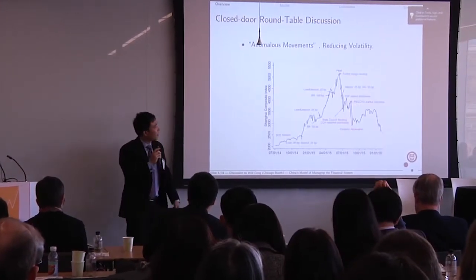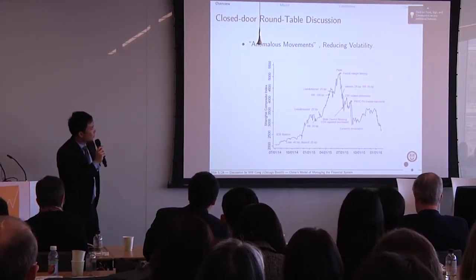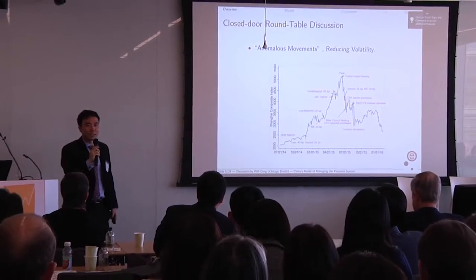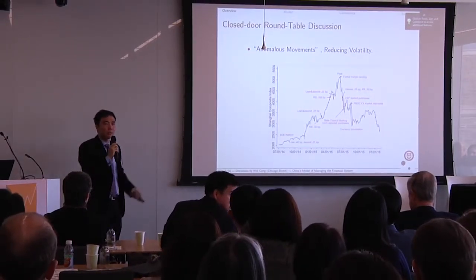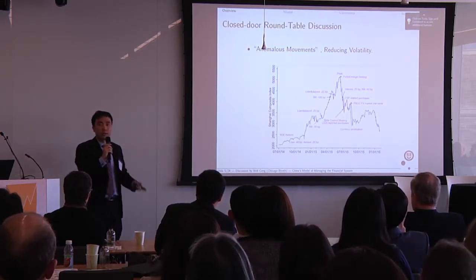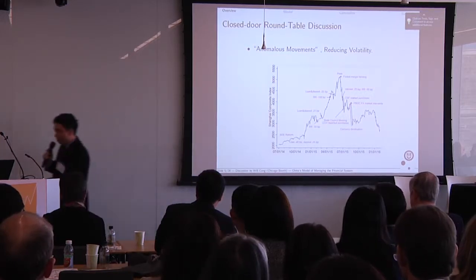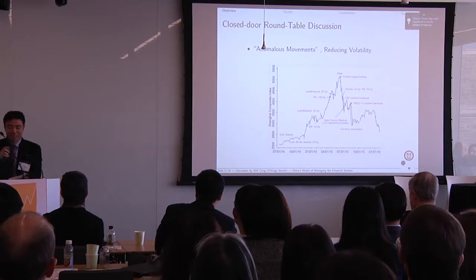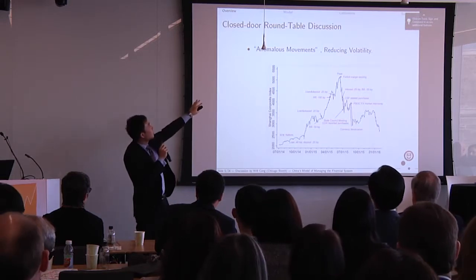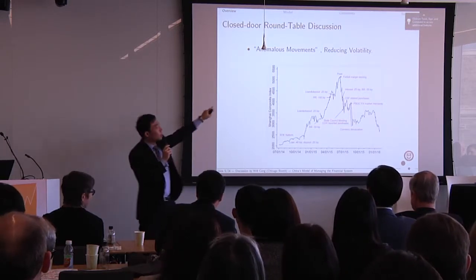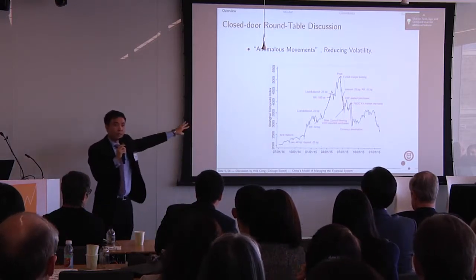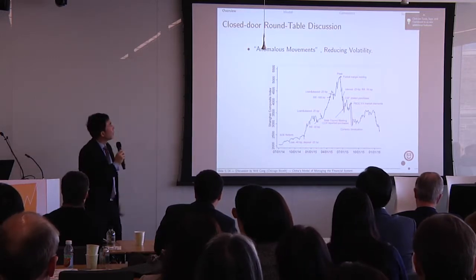About half a year later, the discussant was visiting China in December and by serendipity was invited to a closed-door roundtable discussion organized by the government, with CSRC and exchange officials as well as researchers from Xinhua University. He brought a document circulated internally at the time: they were not allowed to call it a stock market crash — it was called 'an anonymous movement in the market.' One of the key objectives for all the interventions was exactly to reduce volatility.